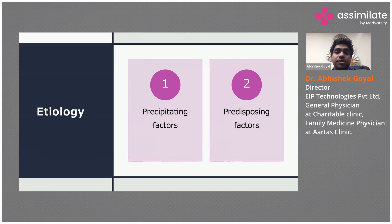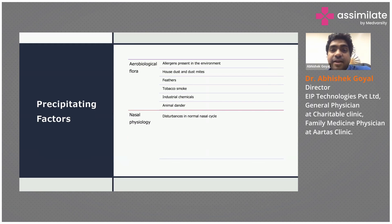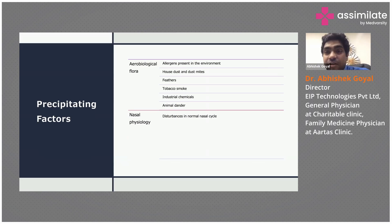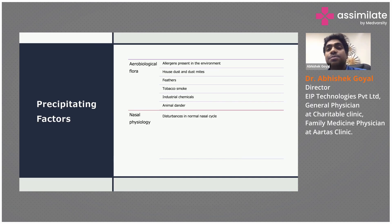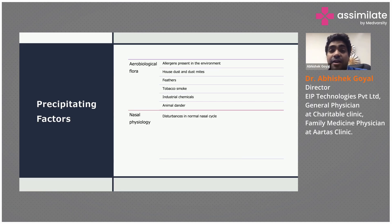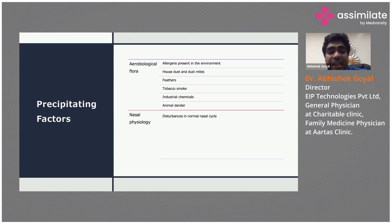The etiology of allergic rhinitis is divided into precipitating and predisposing factors. Precipitating factors are the allergens present in the environment. Anything from the earth to the sky can cause allergy — house dust, dust mites, feathers, tobacco smoke, passive smoking, industrial chemicals, and animal dung. Disturbances in the normal nasal cycle are also precipitating factors.